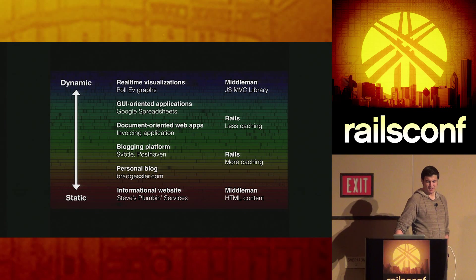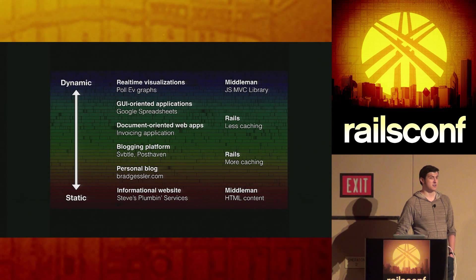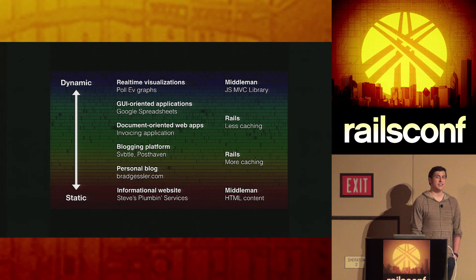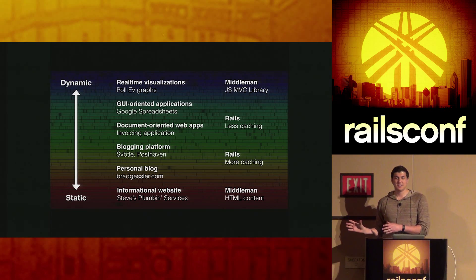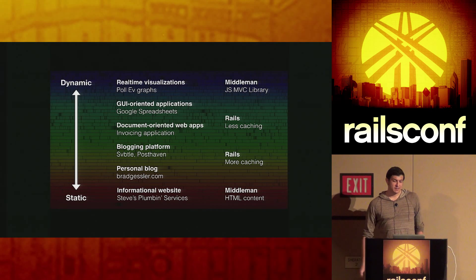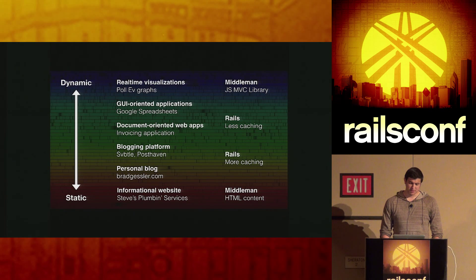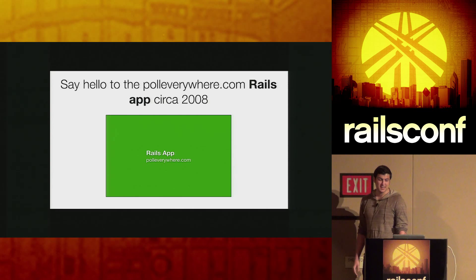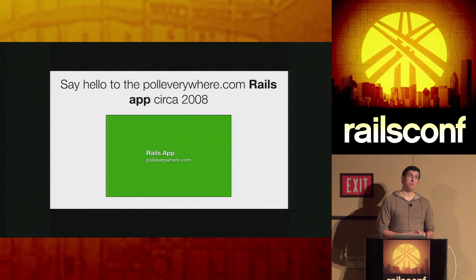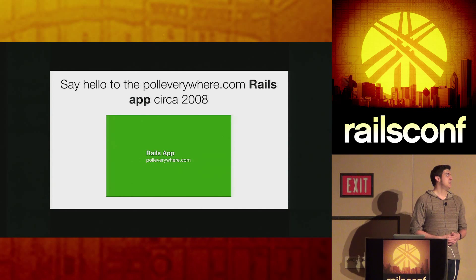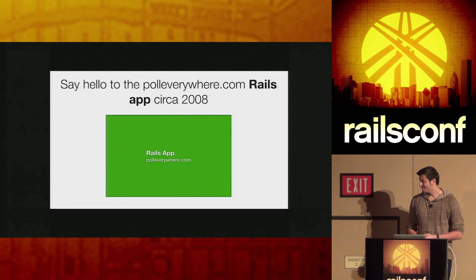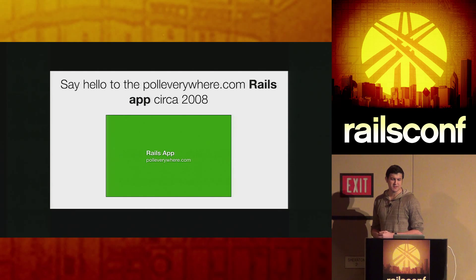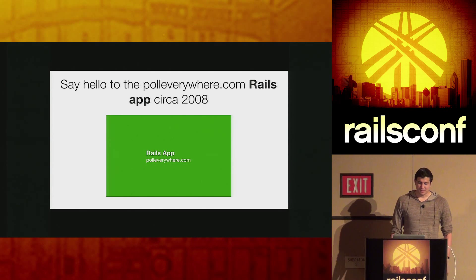Where does Middleman fit into all of this? If you're working on a Greenfield application, it's pretty easy to get started. You build your single page HTML application here, and you build a smaller API off to the side using Sinatra or some micro-framework. But since we've been around as a company since 2008, we actually started out using Rails 1.2 — before REST was even a thing in Rails. We set up this application at polleverywhere.com and were able to move pretty fast.